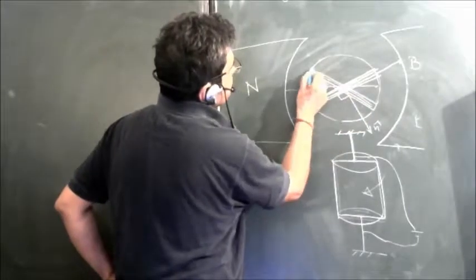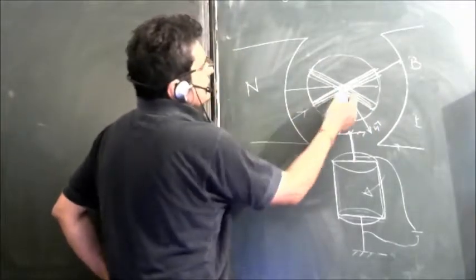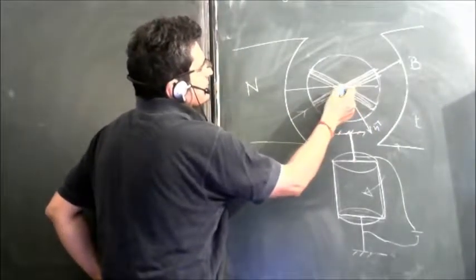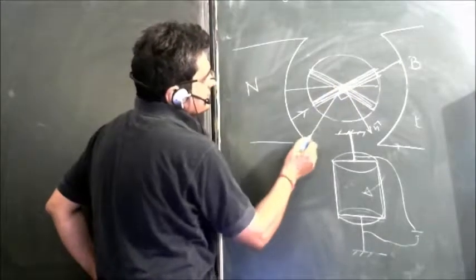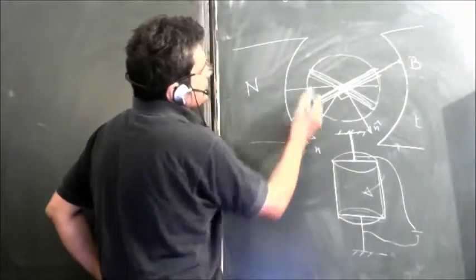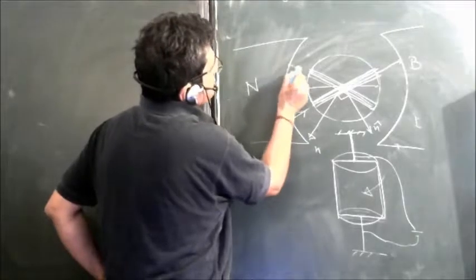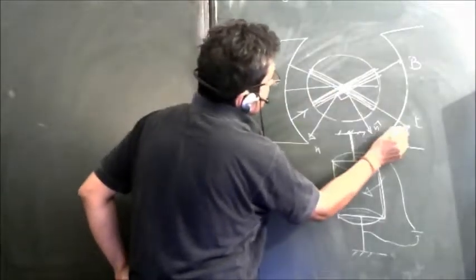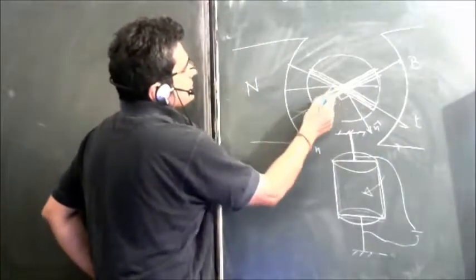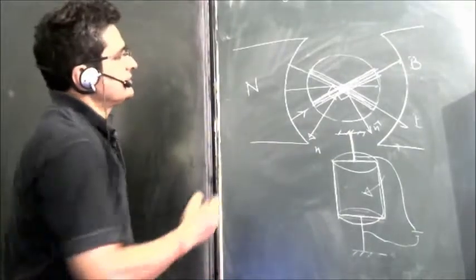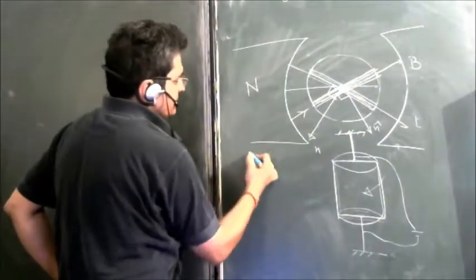If the coil has rotated and come to this position, this is the new position of the coil. The area vector will be like this, this is the new area vector. And see, the magnetic field is again going perpendicular to the area vector.